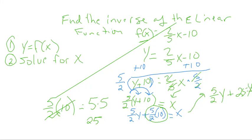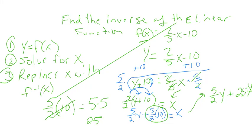Now the last thing I'm going to do, once I've solved for x, is replace the statement with f inverse of x. That's going to indicate that we have found the inverse, and I'm going to switch things so it looks like this: five over two x plus 25 equals f inverse of x. And that is finding the linear inverse of a function.